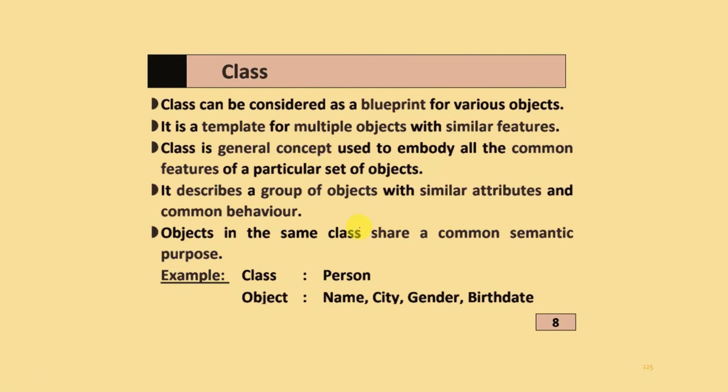What is class? Class can be considered as a blueprint for various objects. It is a template for multiple objects with similar features. Class is a general concept used to embody all the common features of a particular set of objects.